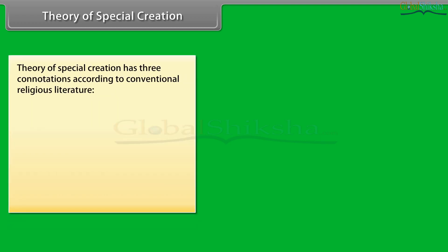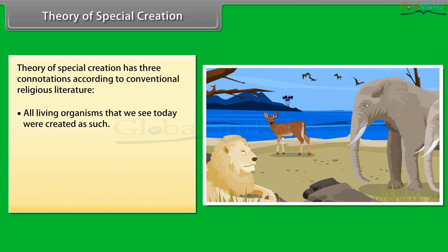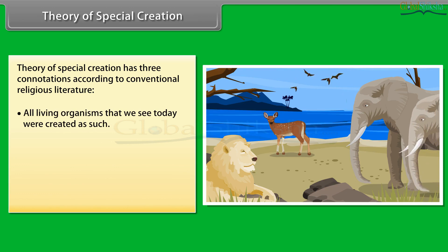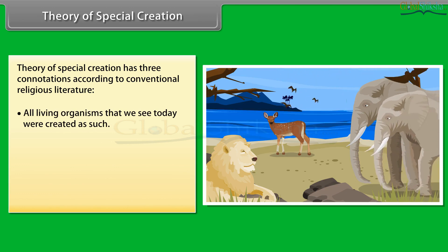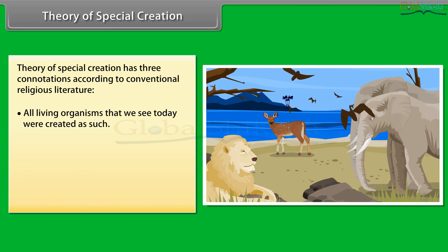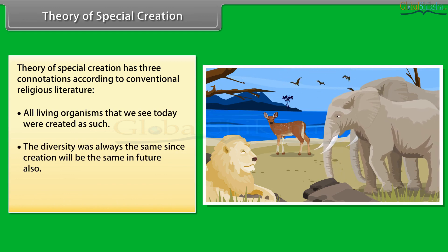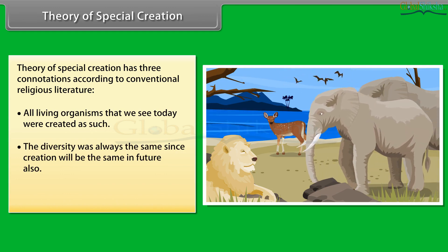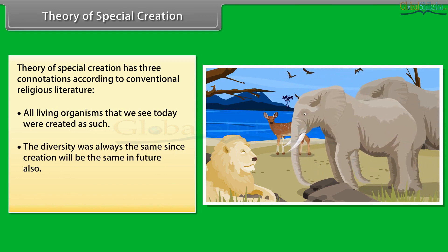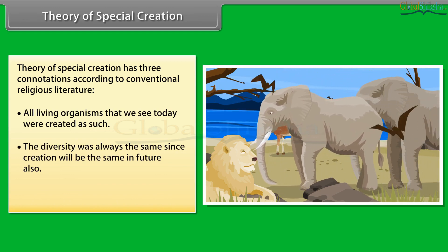Theory of Special Creation has three connotations according to conventional religious literature: all living organisms that we see today were created as such; the diversity was always the same since creation and will be the same in the future; and Earth is about 4000 years old.